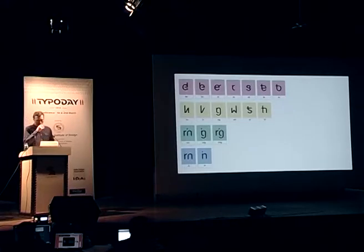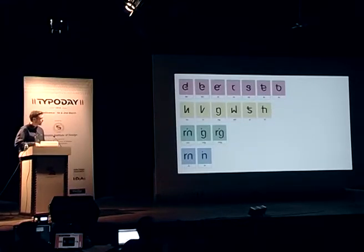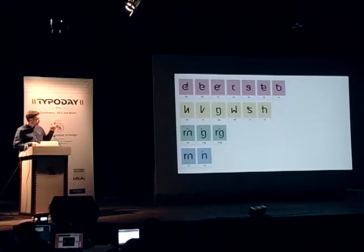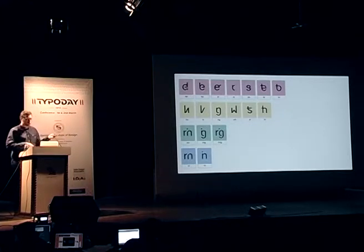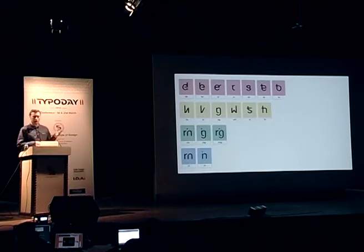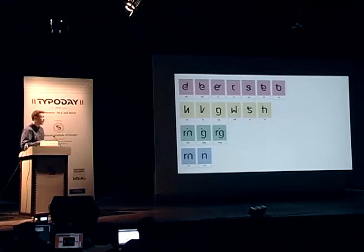So here are the new letters I created for the alphabet. The first ones are vowels and consonants together, and then consonants and consonants. And in the bottom we have visual ligatures — for instance, R and N in a very small scale may end up looking like an M.